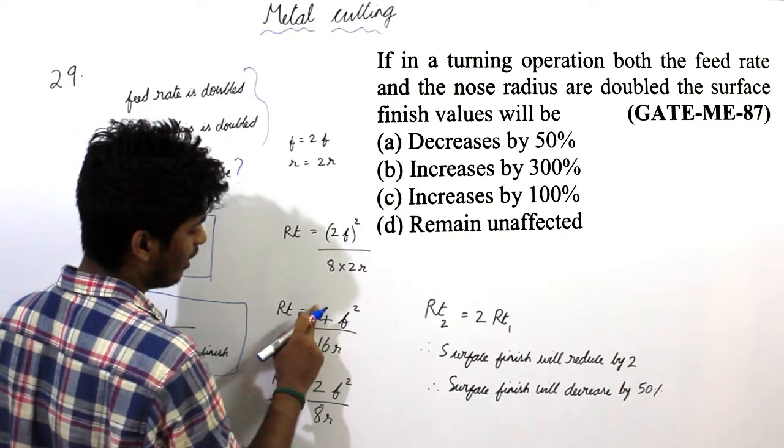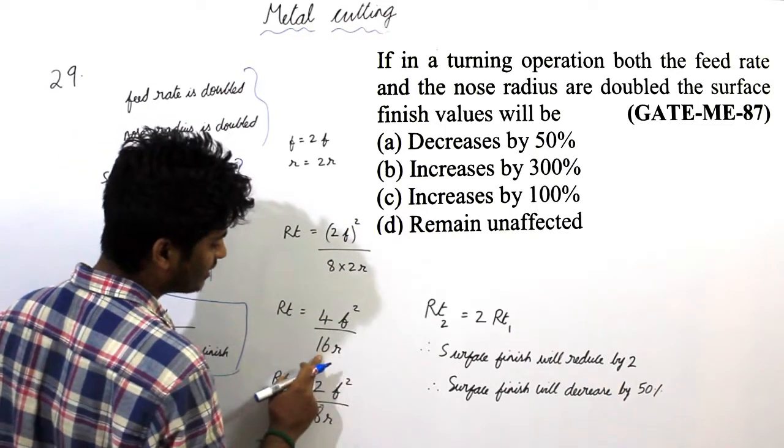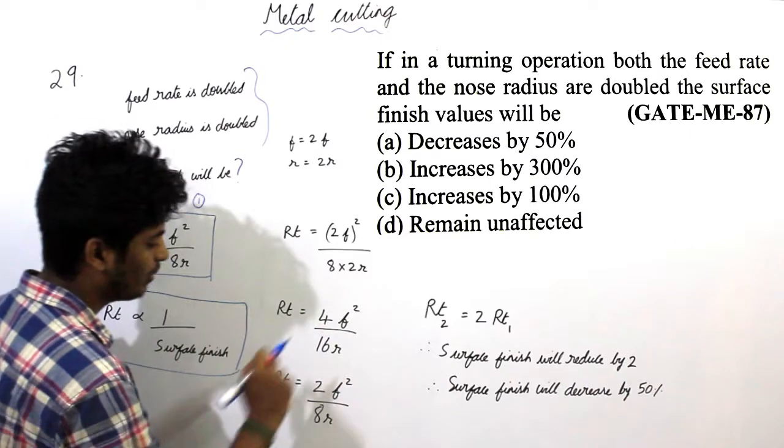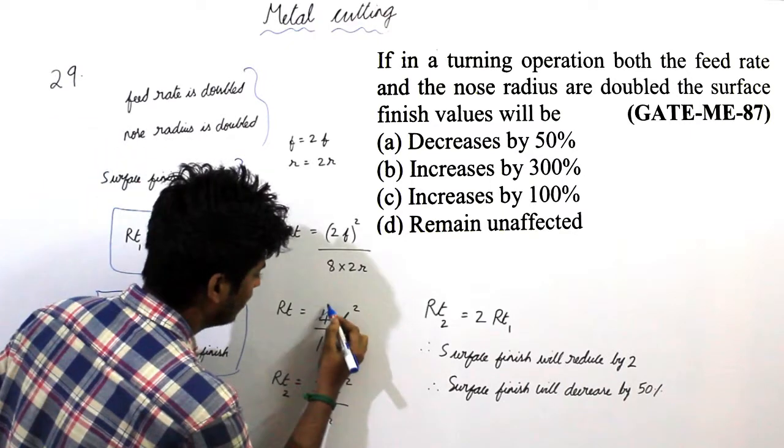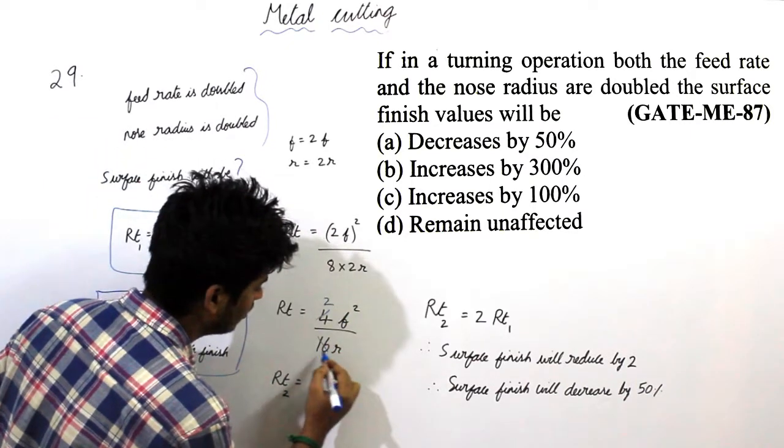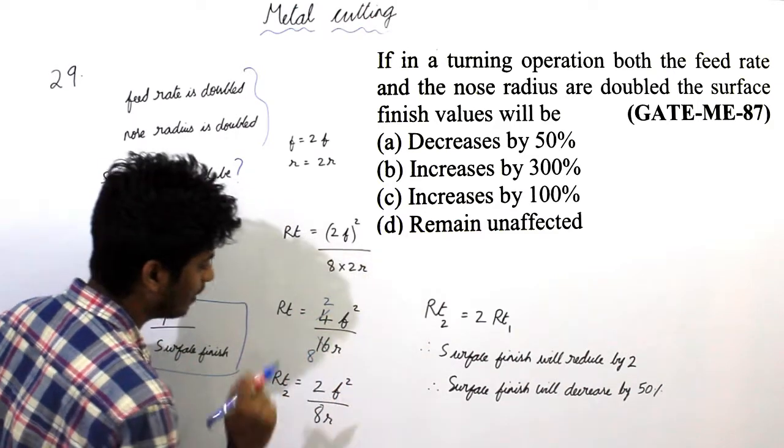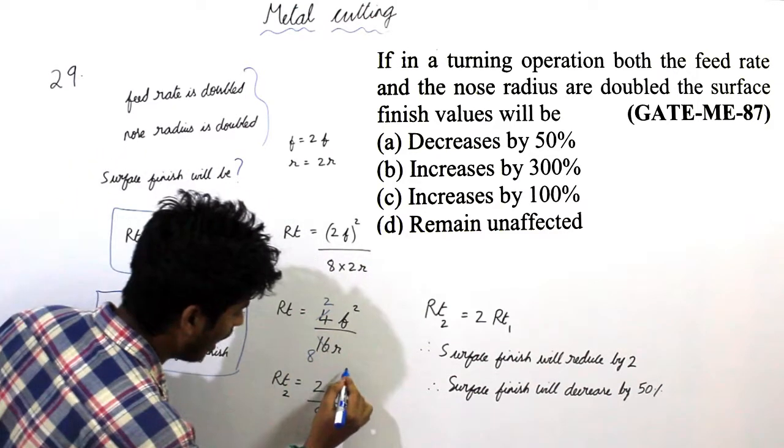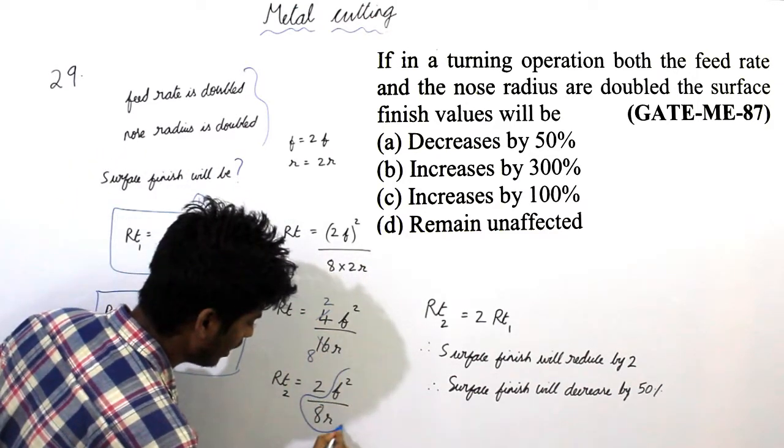Substituting this, I am getting 4f squared by 16r. This is 2 times, this is 8 times. So I am getting f squared by 4r.